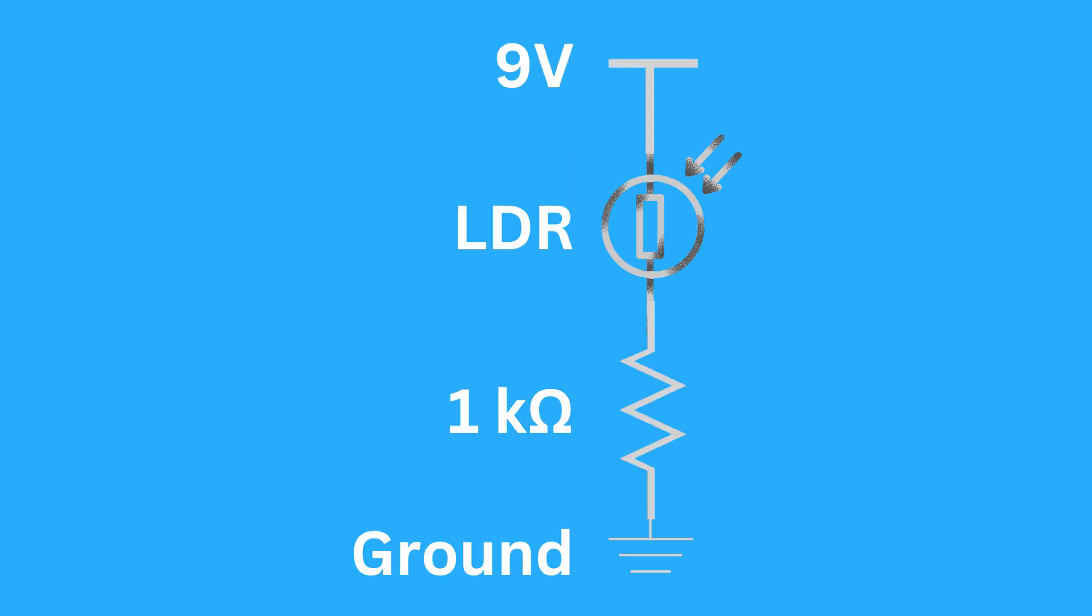Typically, LDRs are used in a voltage divider configuration. Ensure that you have a resistor in series with the LDR. The value of this resistor can be chosen based on the desired sensitivity and the range of light levels you need to detect.